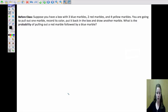All right, for class, why don't you guys try to answer this question? Suppose you have a box with three blue marbles, two red, and four yellow. You're going to pull out one marble, record its color, put it back in the box, and draw another marble. What is the probability of pulling out a red marble followed by a blue marble? So think about the fact that you're putting them back in, and what does that do to your chances? Does that change it? Is this conditional probability, or is this not, and why?